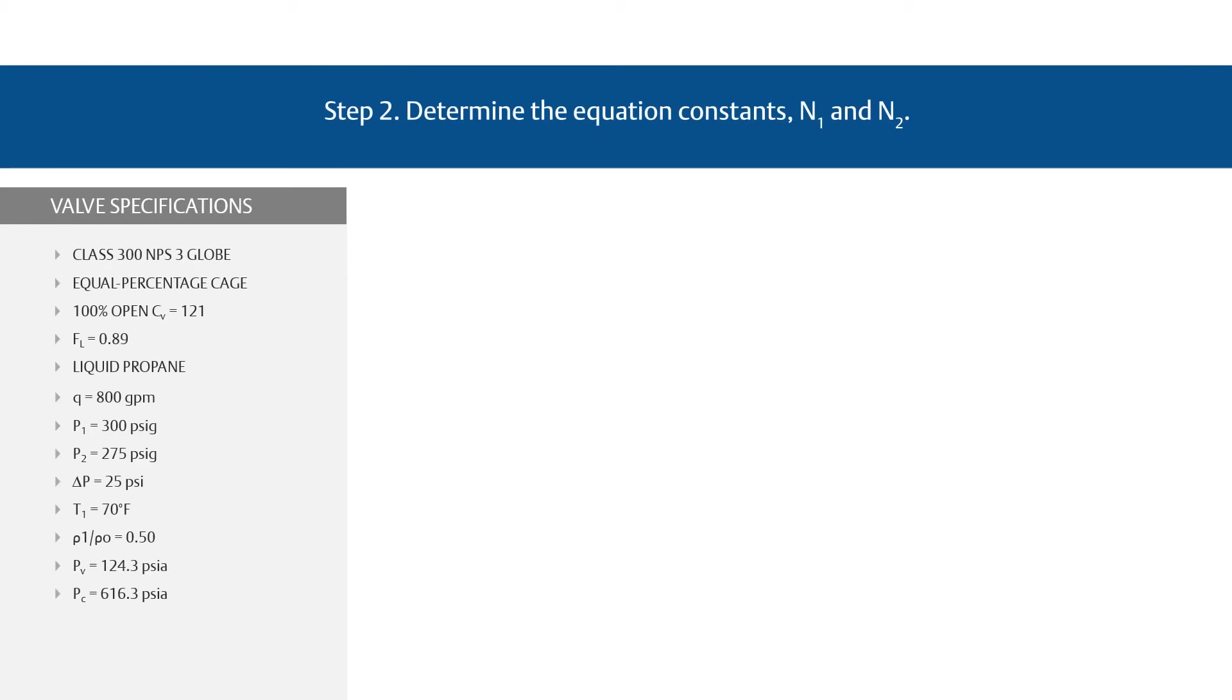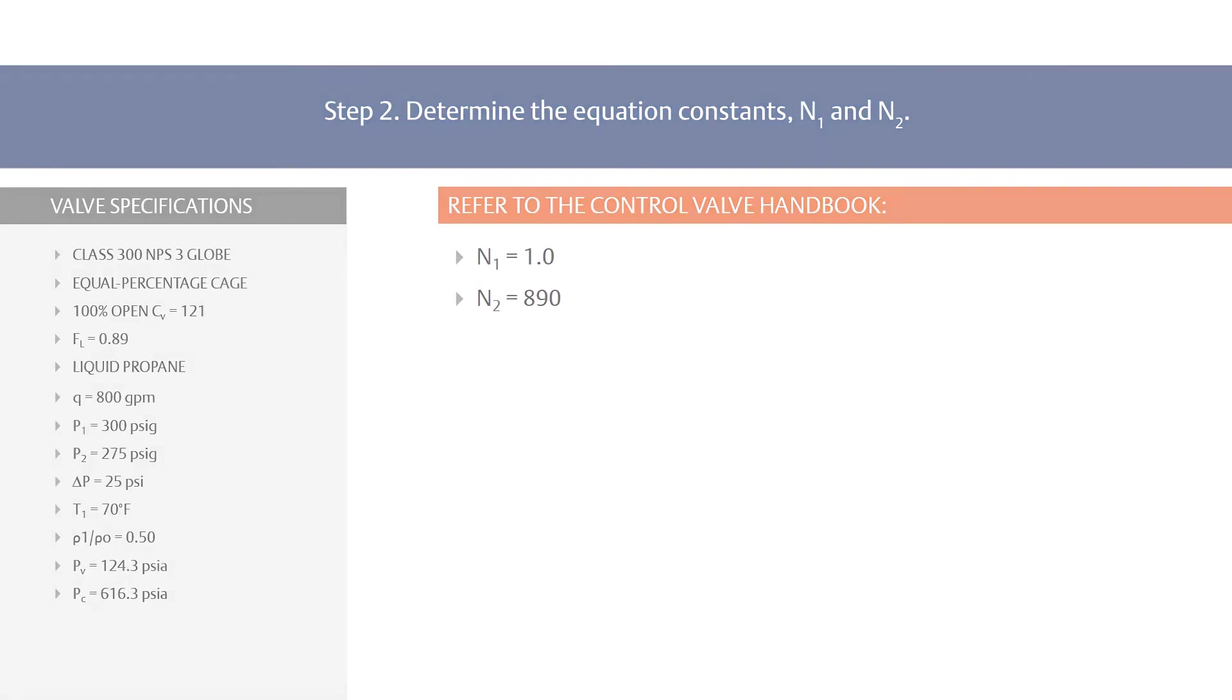Step 2, determine the equation constants, N1 and N2. From the equation constants table in the control valve handbook, N1 equals 1.0 and N2 equals 890.